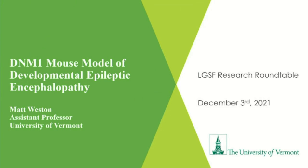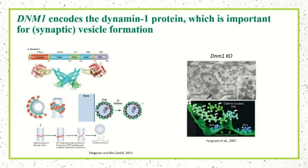I'll talk about this Dynamin-1 mouse model of DEE that we've been working on and try to convince you that it's a good model if we're interested in understanding some of the pathophysiology of Lennox-Gastaut syndrome. The DNM1 gene encodes for a Dynamin-1 protein. There are three Dynamin genes in mammals: Dynamin-1, 2, and 3. Their primary role is to form vesicles — if you need to exocytose or endocytose molecules, you'll likely do this with vesicles.